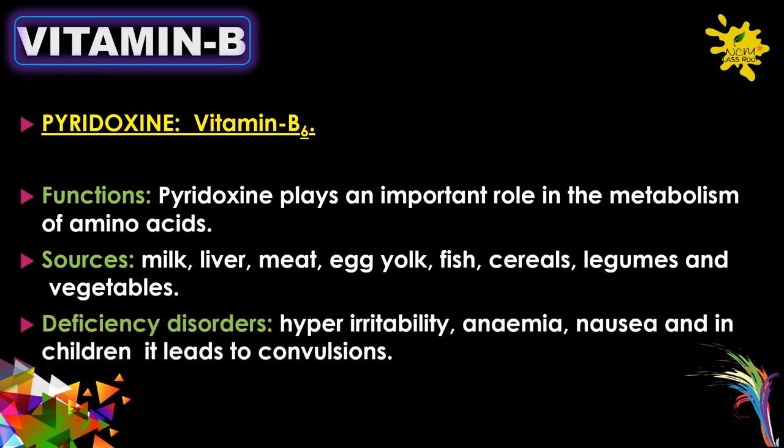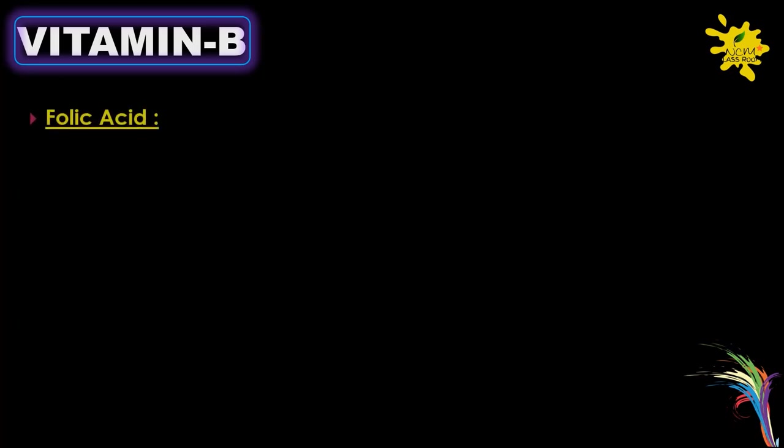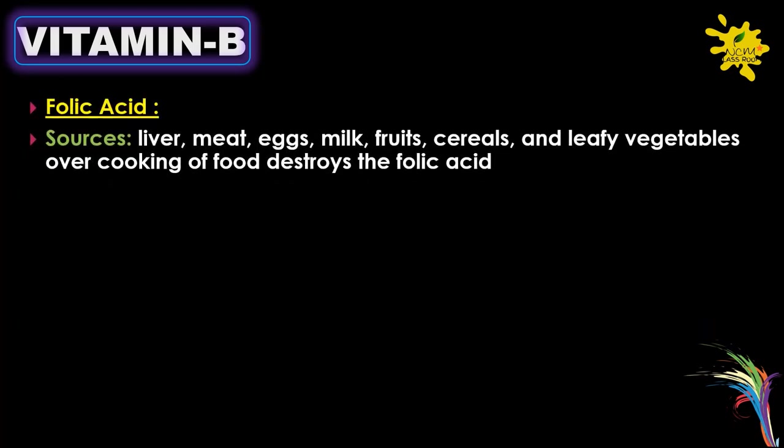Deficiency disorders of Vitamin B6 include hyper-irritability, anemia, nausea, and in children it leads to convulsions. Folic acid sources include liver, meat, eggs, milk, fruits, cereals, and leafy vegetables. Overcooking of food destroys folic acid.